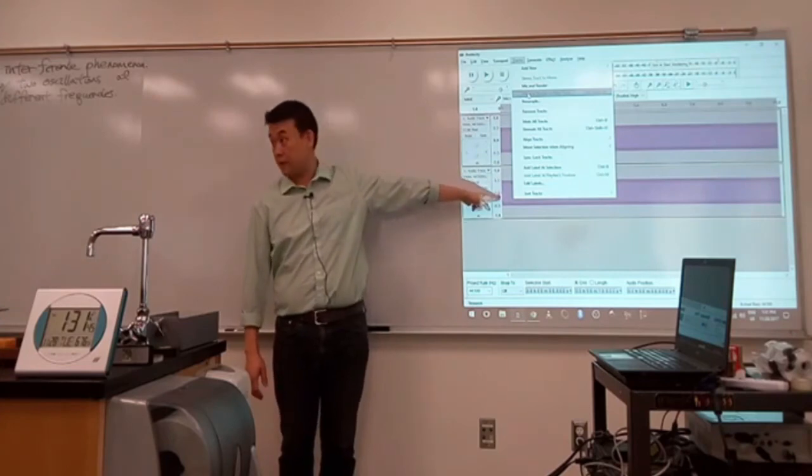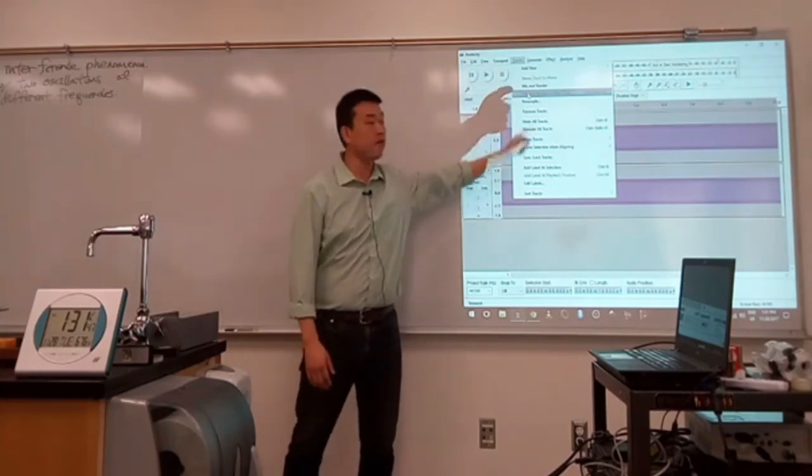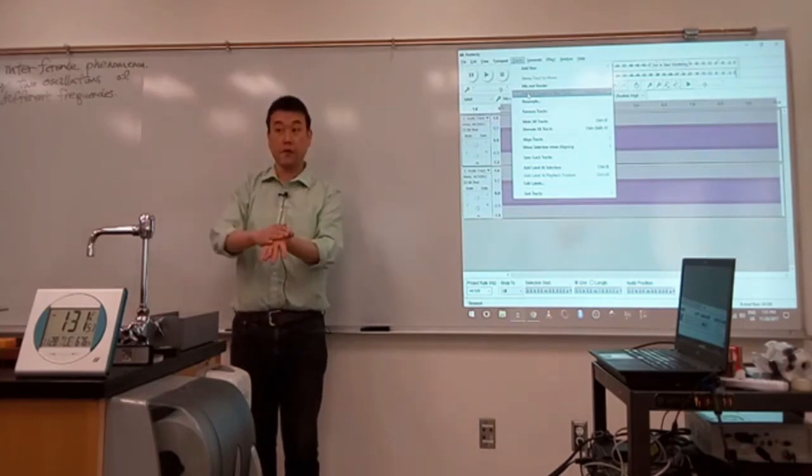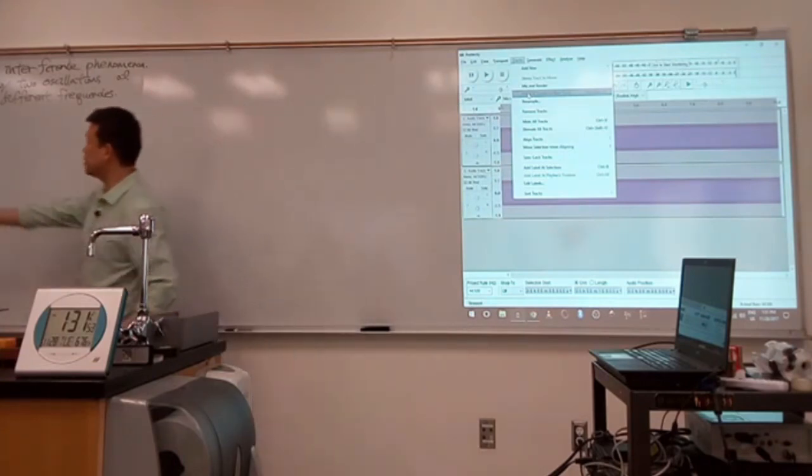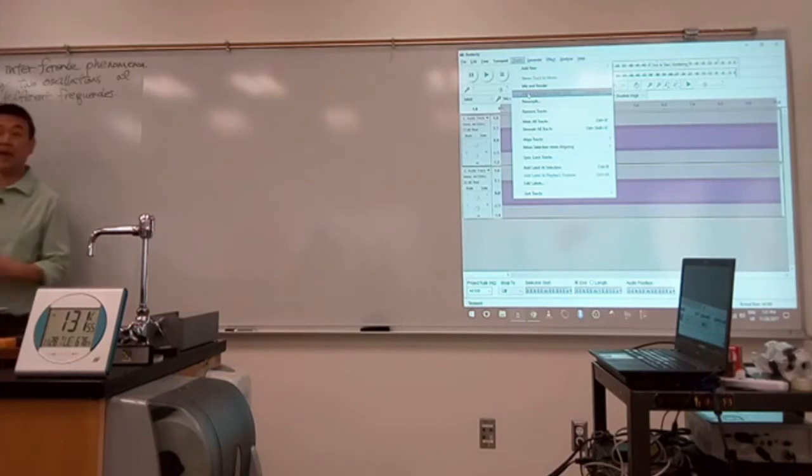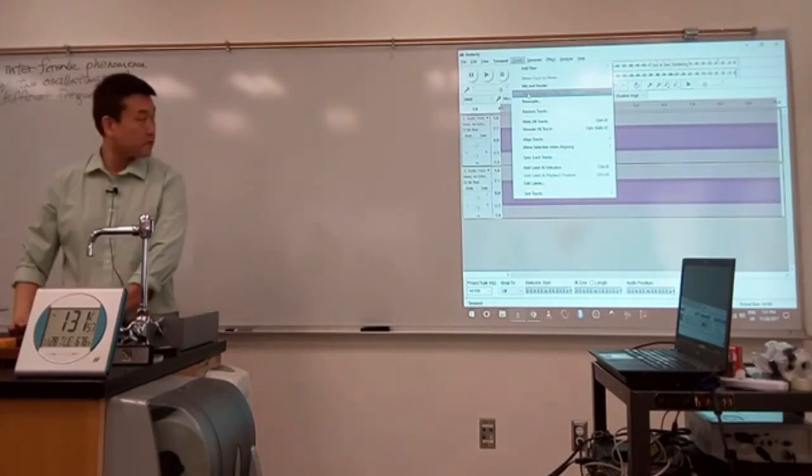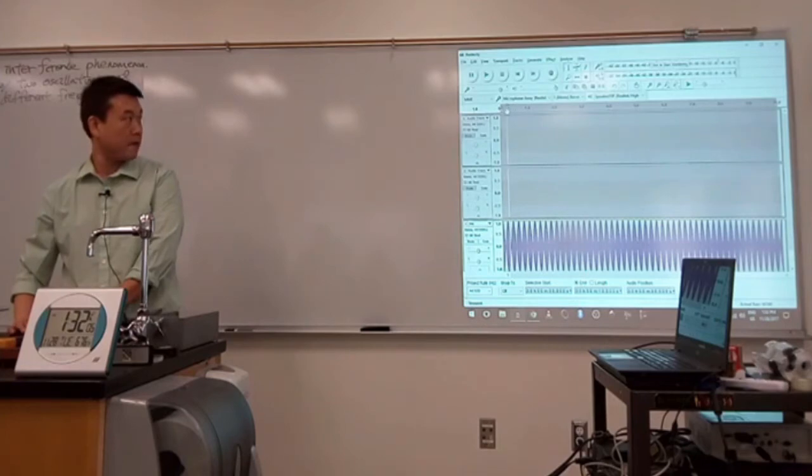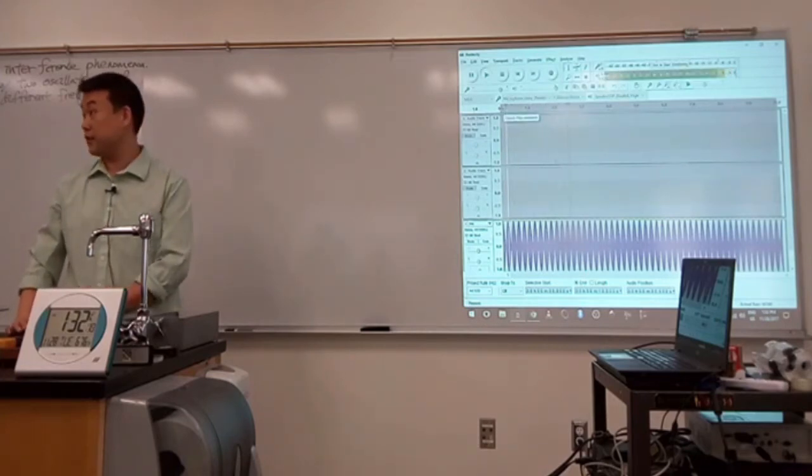And with the mix and render, what it'll do is it'll combine the result of interference of those two waves, do this superposition principle thing, and give me the combined result. So mix and render it to a new track. And this is the result that you see. And once you see this wave shape, then it should make a little more sense why you are hearing what you are hearing.